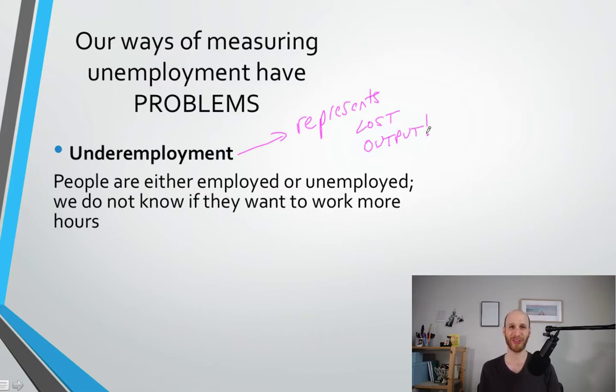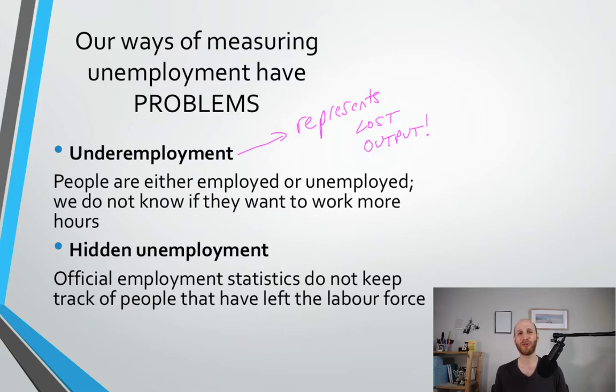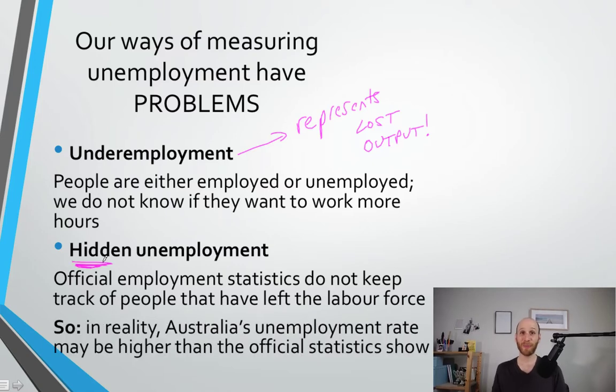The other issue with our way of measuring unemployment is that our official stats don't keep track of people who have left the workforce and are not looking for jobs. So we can very accurately or reasonably accurately track people who are employed or looking for work, but we can't really look at those people that have given up on looking for work. And the people that have given up looking for work are the hidden unemployment. So actually our unemployment rate could be higher, but because we define it as people who are actively seeking work, we don't really think about those people that have given up. Although those people who have given up, they could be more labor resources that could help grow the economy.